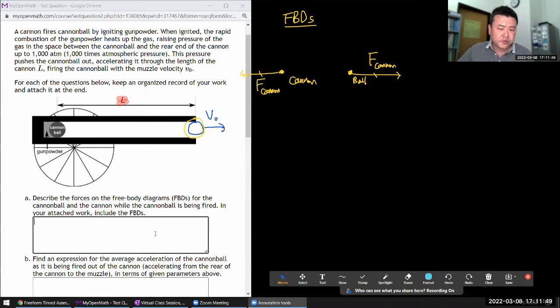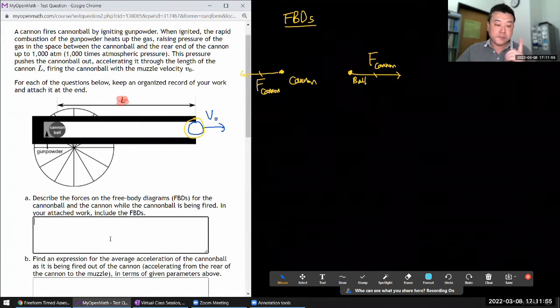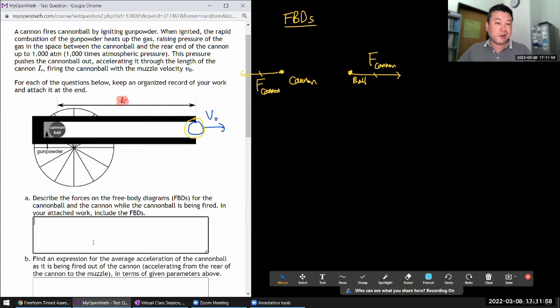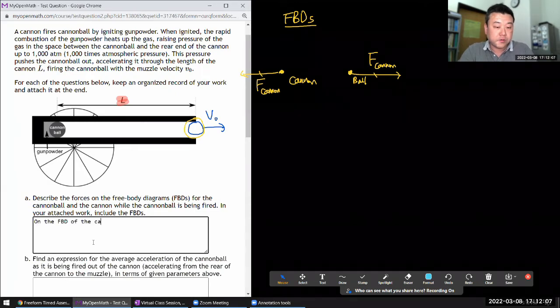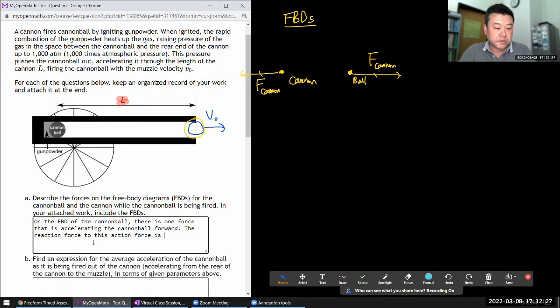For the answer you would have to describe it because I do want people to attach an image of something like this in your work. On the free body diagram of the cannonball there is one force that is accelerating the cannonball forward. The reaction force to this action force is on the free body diagram of the cannon.